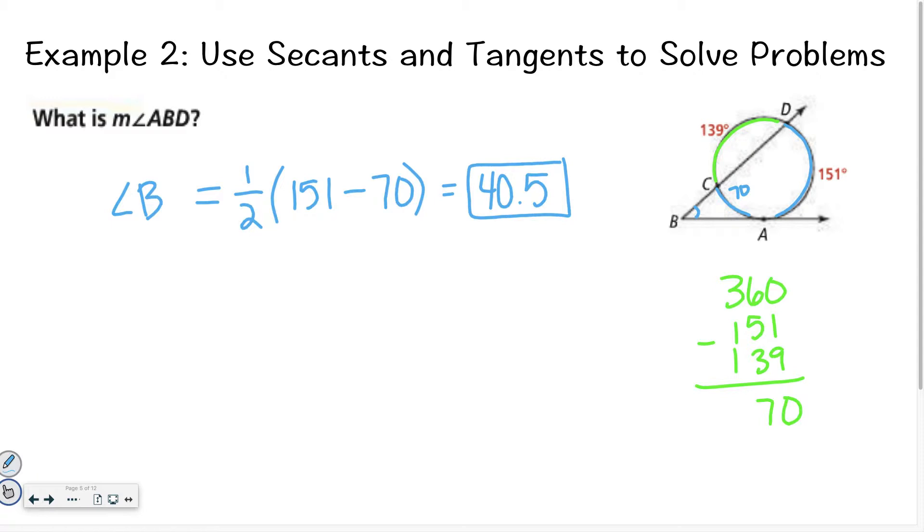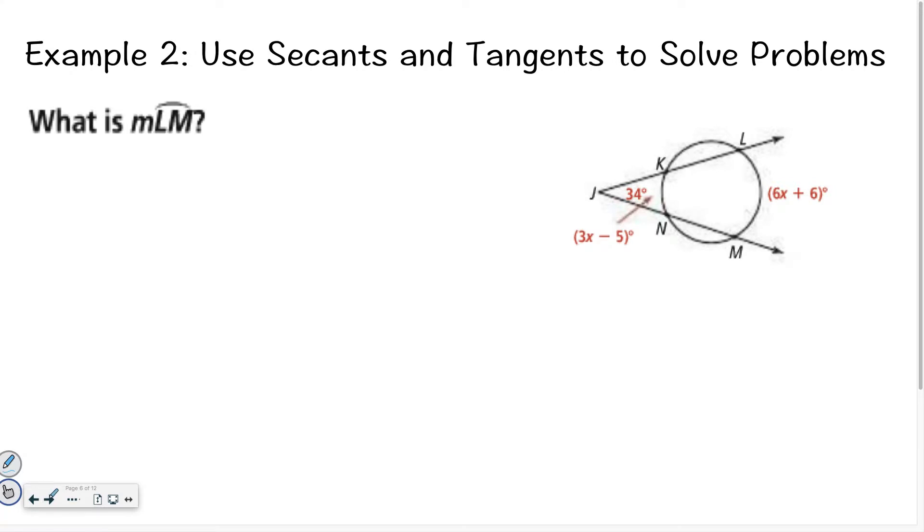So I'm going to do 151 minus 70 inside my parentheses. Now if I multiply all of that together, I end up with 40.5 for an answer. If you have a question about that, please don't hesitate to ask. Let's look at another example. That first one was fairly straightforward, just numbers.